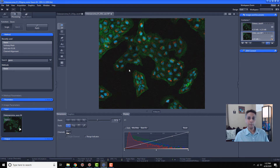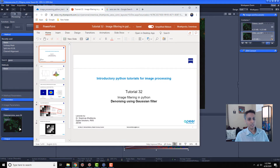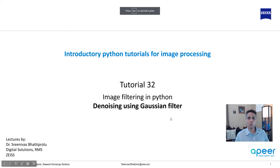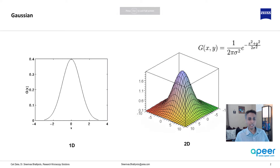That's how you use it in Zen or any other image processing software, but how do you actually do it in Python? Before jumping into Python, let's understand what exactly is happening. Let me jump back to my presentation and talk about what a Gaussian is. Most of you are probably scientists, so you likely know a Gaussian is a bell curve in one dimension.